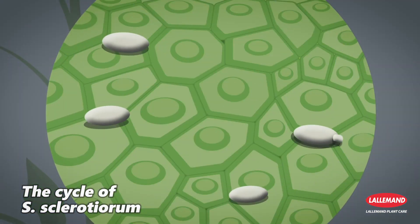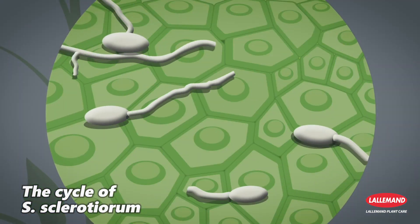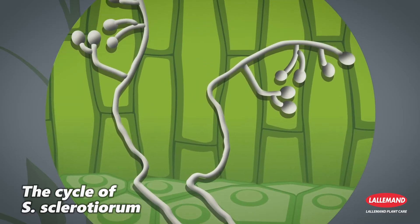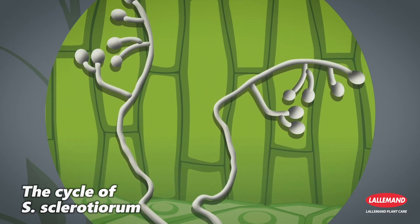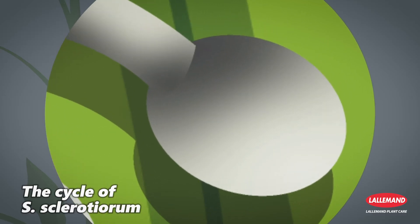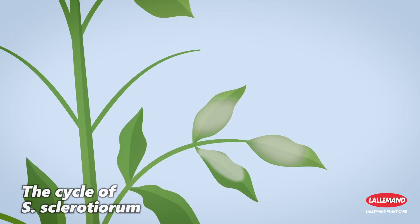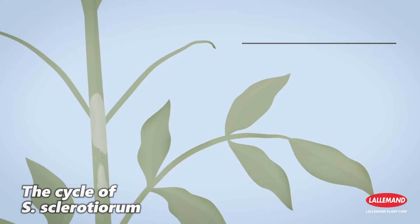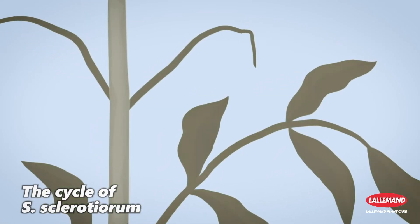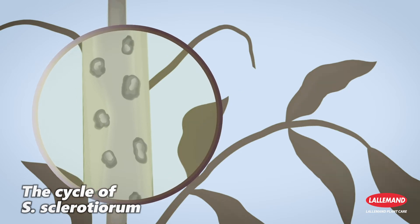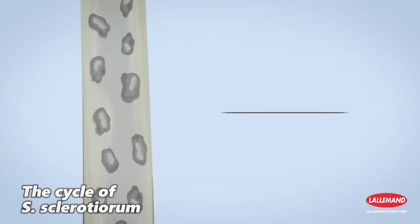When environmental conditions are favourable, the spores germinate and rapidly form a vast mycelial network that invades the aerial organs of the plant. White rot spreads, giving rise to visible symptoms of the disease. New sclerotia form in the stems, disrupting the circulation of sap flows and seed filling.